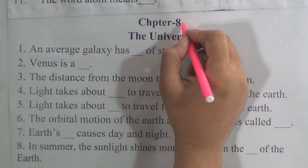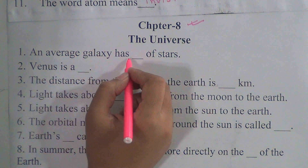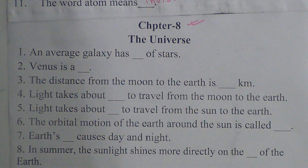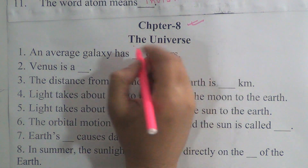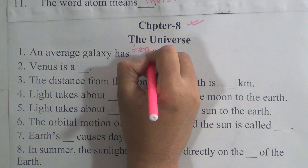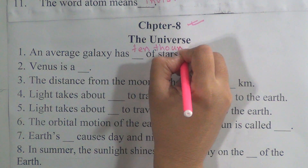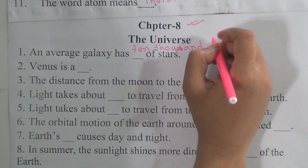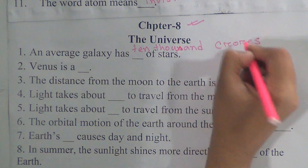Now we will solve the fill in the blanks from chapter 8. The name of the chapter is The Universe. Number one: an average galaxy has 10,000 crores of stars.